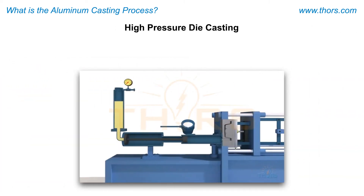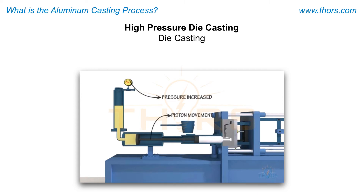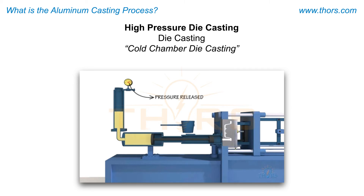High pressure die casting, also simply referred to as die casting, consists of forcing the liquid alloy into metal dies at high speed and high pressure using a piston. This may also be referred to as cold chamber die casting, since the chamber and piston are not heated during the process.